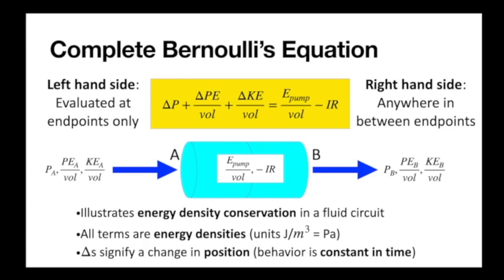Just a little note: all of this is energy density, so all these terms have units of energy per volume. Any questions about how to apply Bernoulli's equation in general? The key to go along with this is the continuity equation, which relates flow rate to cross-sectional area and speed.